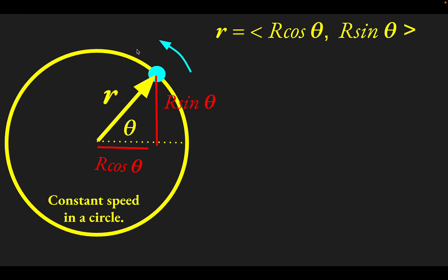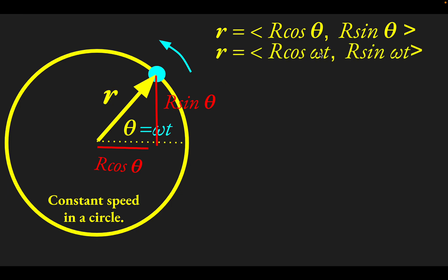Now we want this object to actually move at constant speed in the circle. In that case, the angle increases linearly with time — analogous to distance equals rate times time, we have angle equals angular speed times time. So we write the angle as ω·t, making theta time-dependent: the object rotates at constant angular speed omega.